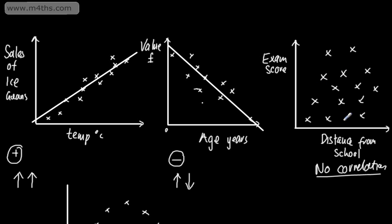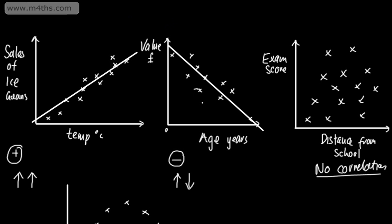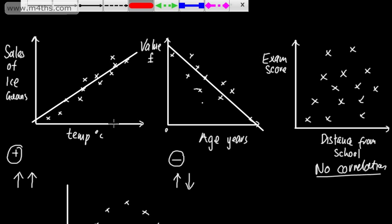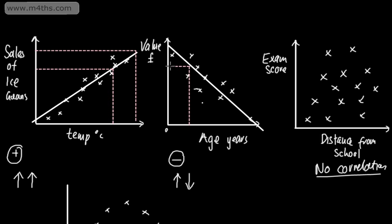When we've got no correlation, we couldn't use a line of best fit. The line of best fit allows us to predict certain values. So for example, if we wanted to know at 28 degrees roughly how many ice creams we'd expect to sell, or if we sold 30 ice creams what was the temperature — or if we had a two-year-old car, what was the value — that's how we would use a line of best fit. With no correlation we can't use a line of best fit. So this is correlation: it states the relationship between two data sets.